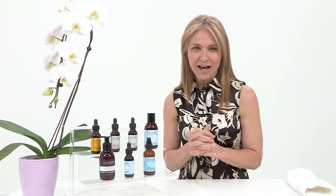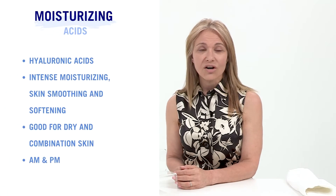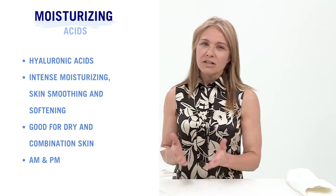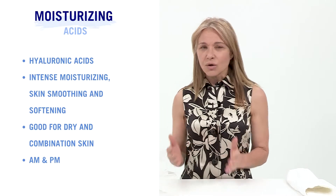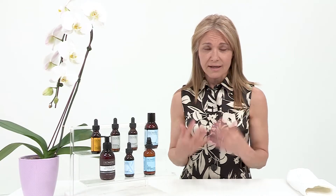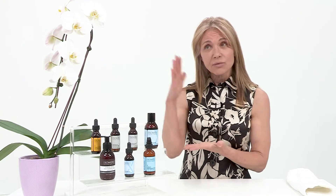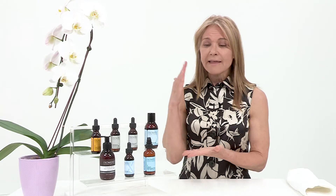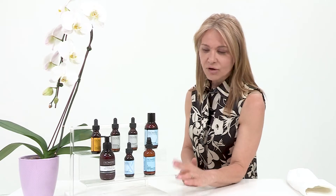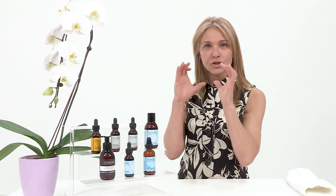That was the alpha and beta hydroxy acids. Now we're going to move on to the next group: moisturizing acids. That is your hyaluronic acid — hyaluronate, multi-molecular hyaluronate, sodium hyaluronate. Everybody wants hyaluronate on their skin, and it is an acid; that's why it's called hyaluronic acid. The 'acid' refers to the pH of the product. Your hyaluronic acid is your moisturizer.